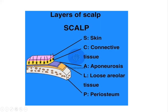Below the connective tissue, the L stands for Loose areolar tissue, and the P stands for Periosteum. So the five major layers of the scalp are: Skin, Connective tissue, Aponeurosis, Loose areolar tissue, and Periosteum. Thank you for watching and see you in the next video.